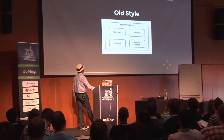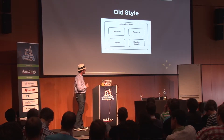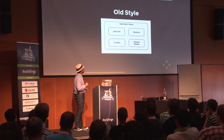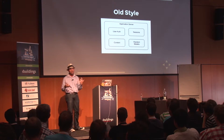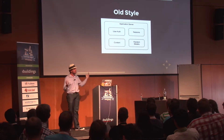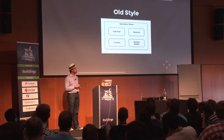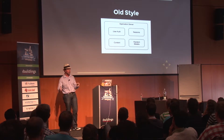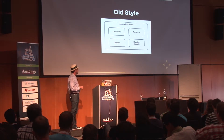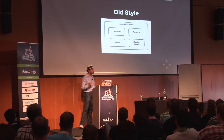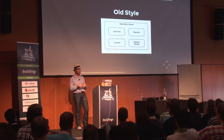What does that look like? The old style is a zoom-in on the application server box. Pretty simple: you have your user authentication, your sessions, and any sort of content — random models, random things you've got in your database. They're all inside your application server. Your user code can talk to sessions because it's just right there. Session code can look up random data and stick it in the session. Content can know whether the user is authenticated. All these things are executing together in one big container.